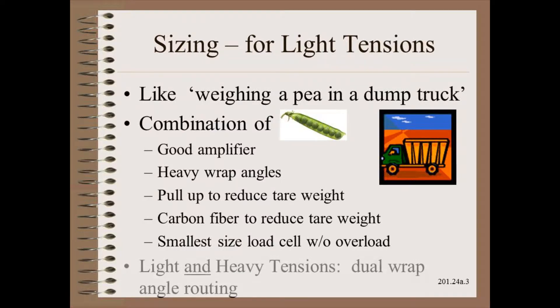Another related challenge is to accommodate a very wide range of products. Here we can have a dual routing of the web to give a high wrap angle for light products for maximum sensitivity and a low wrap angle for heavy products so that you don't need to upsize the load cell. Alternatively, you could have two different load cells and routings, but that is electrically and mechanically more costly.